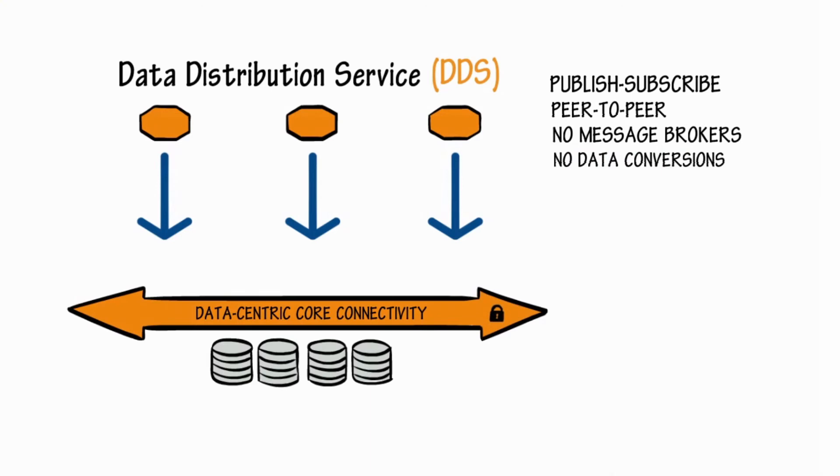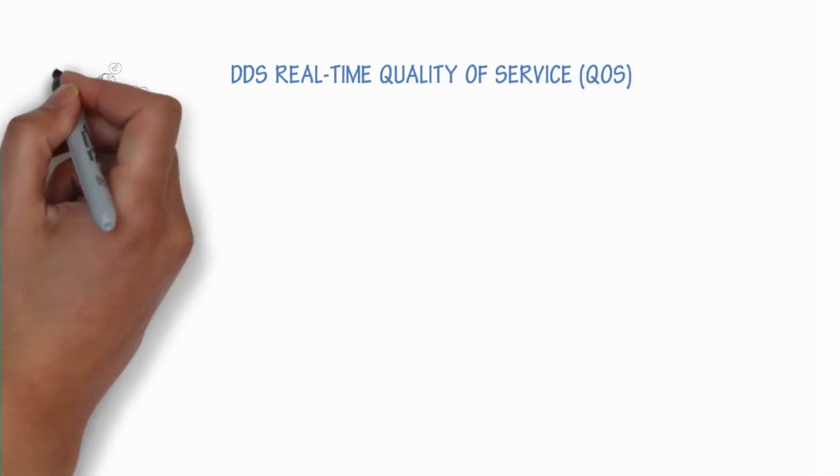DDS also provides applications with very precise, real-time control over quality of service. Quality of service can tell applications how the data should be sent. For example,